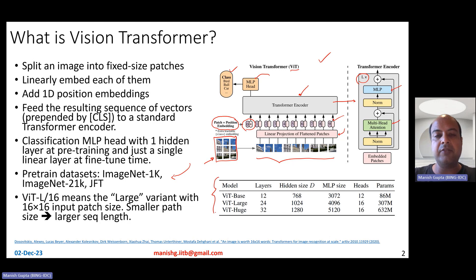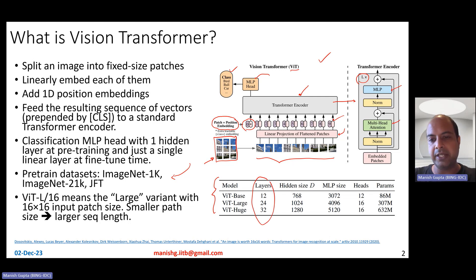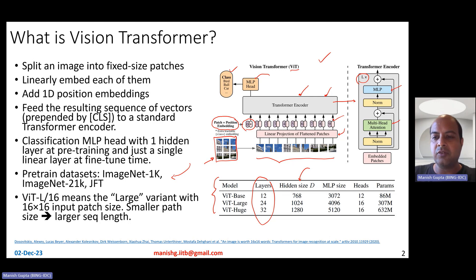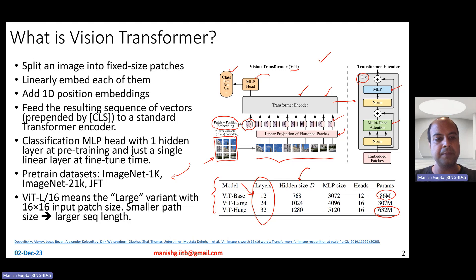They train three different VIT models of different sizes: base, large, and huge, which differ in terms of the number of layers, the hidden dimension of the Transformer Encoder, and the MLP size. Overall, the huge model has 632 million parameters, while the VIT base model has 86 million parameters — pretty much comparable to the BERT base model.